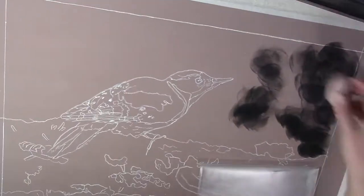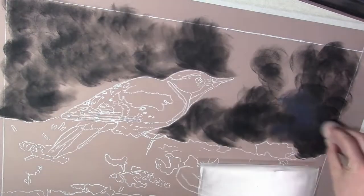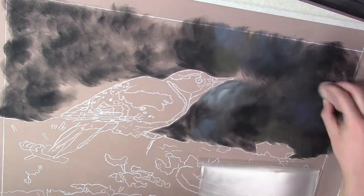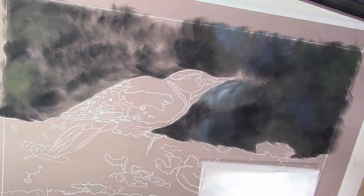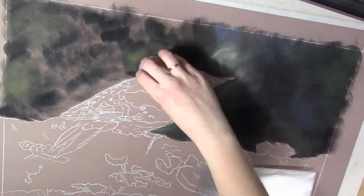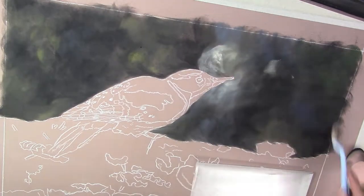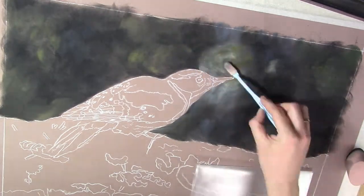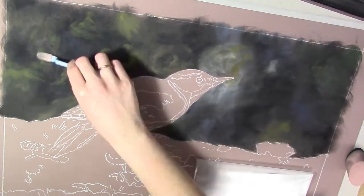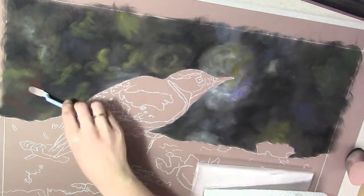Like I most of the time do, I like to start with the background. I like to work from the furthest away to the front of the artwork. This helps me to define better my lights and my darks on the main subject, which in this case is the woodpecker and also the tree with the moss and mushrooms. First of all I'll lay in that background.